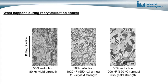The same metal, also reduced in thickness by 50%, was then annealed at 1022 degrees Fahrenheit for one hour. New grains formed inside the metal, replacing the cold work grains. These new grains have fewer dislocations, resulting in a much lower strength of 11 KSI. The sample on the right was annealed at 1200 degrees Fahrenheit, producing larger grains and an even lower yield strength. The relationship between grain size and strength is discussed in our Principles of Metallurgy course.